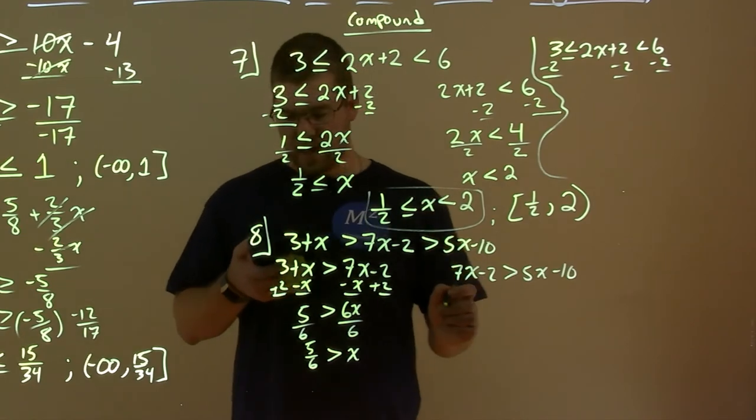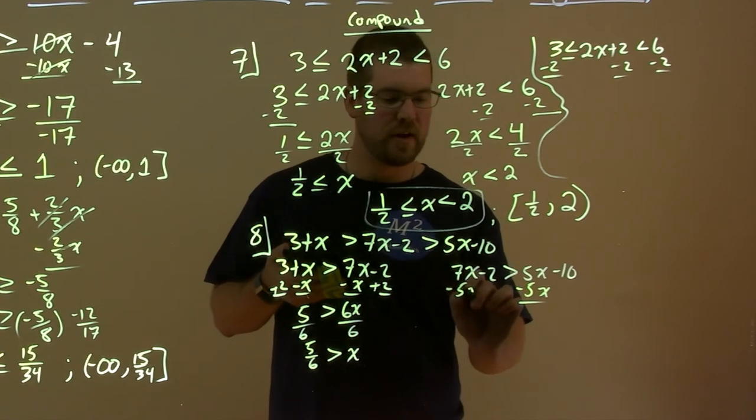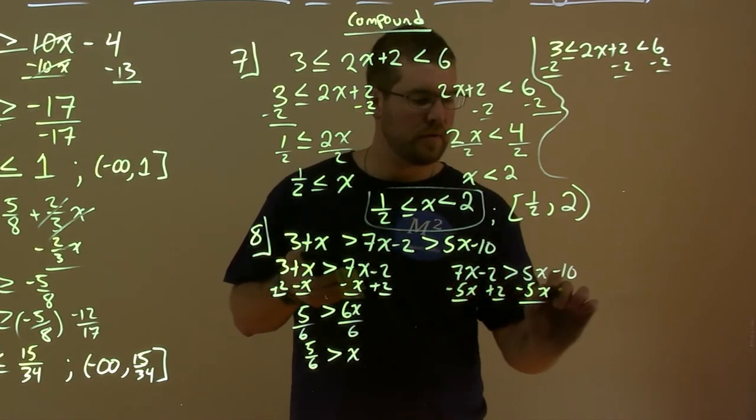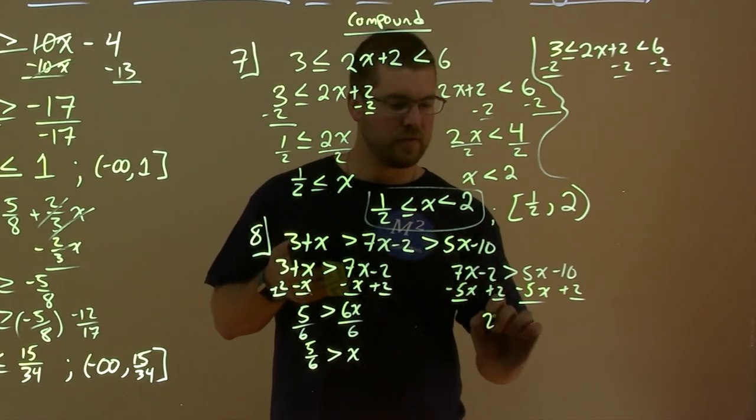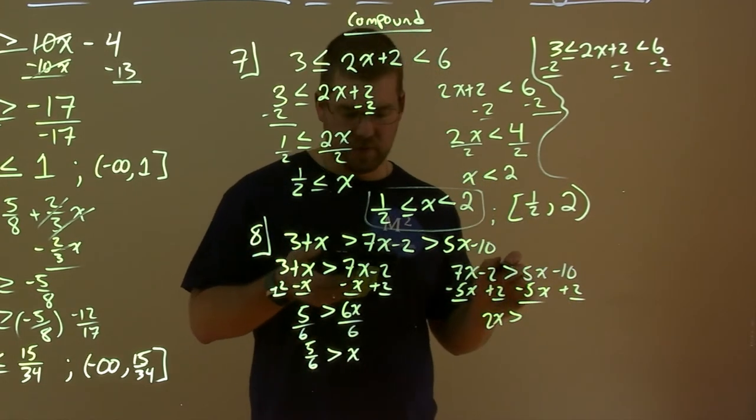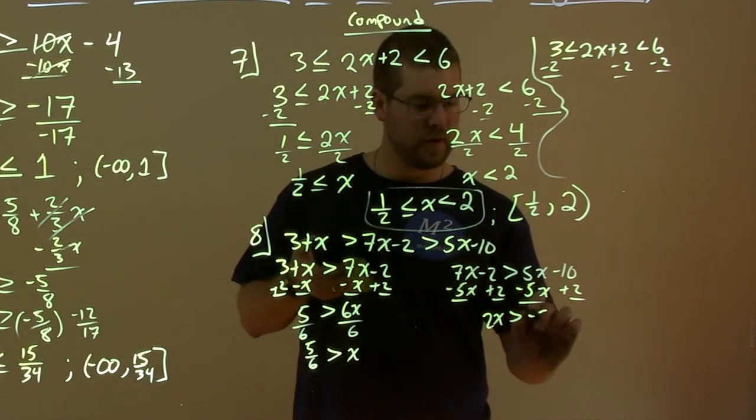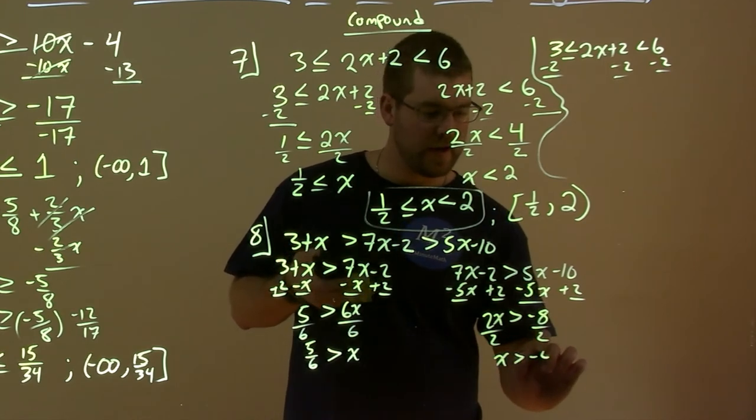On the right hand side. Let's do the same thing. Let's bring the x's to the middle. If we can. Subtract a 5x. Subtract a 5x. Add a 2. Add a 2. And we're left with now 2x left over inside is greater than. And minus 10 plus 2 is a minus 8. Divide both sides by 2. And x is greater than a negative 4.